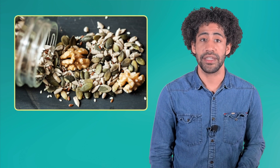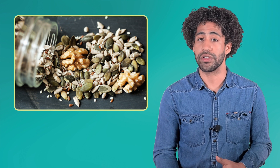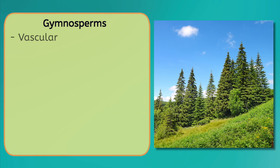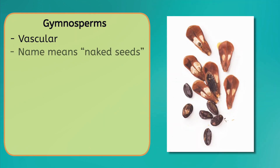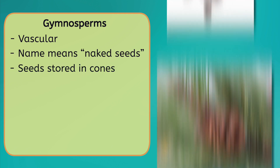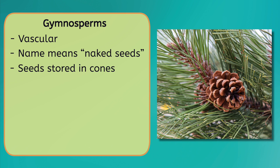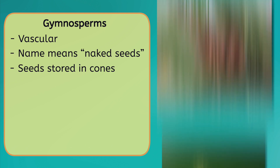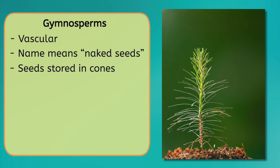The last two phyla we'll discuss reproduce using seeds, which are created during fertilization, or when pollen from two plants is mixed together. Gymnosperms are vascular plants named after their naked seeds, which simply means the seeds aren't enclosed in a fruit. Instead, seeds are stored in cones, which are a signature feature of these plants. When the cones are carried away by the wind or animals to a new place, the fertilized seeds sprout and begin to grow.